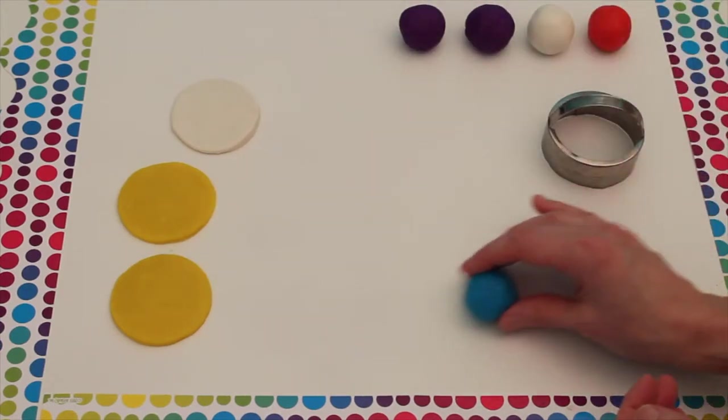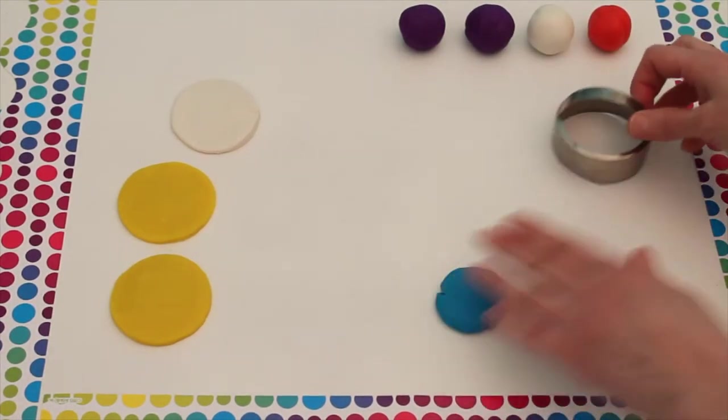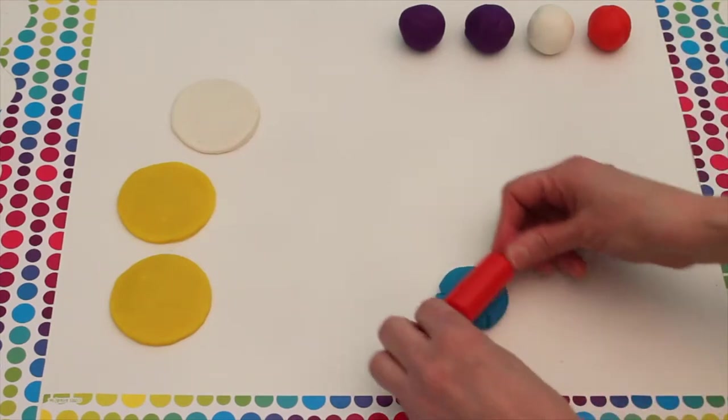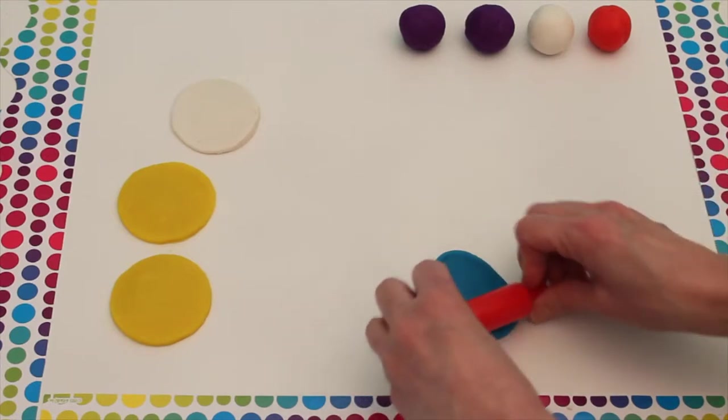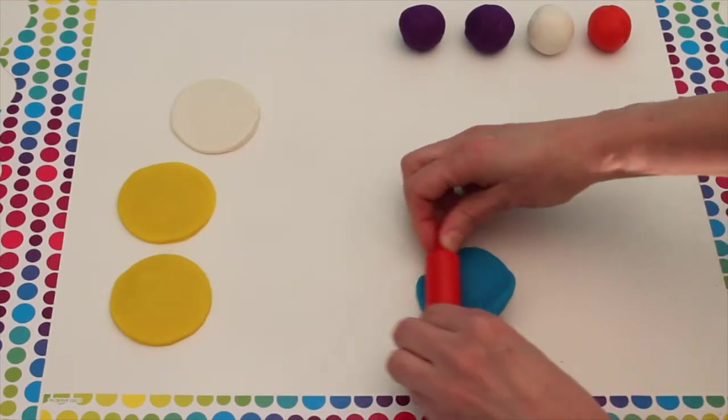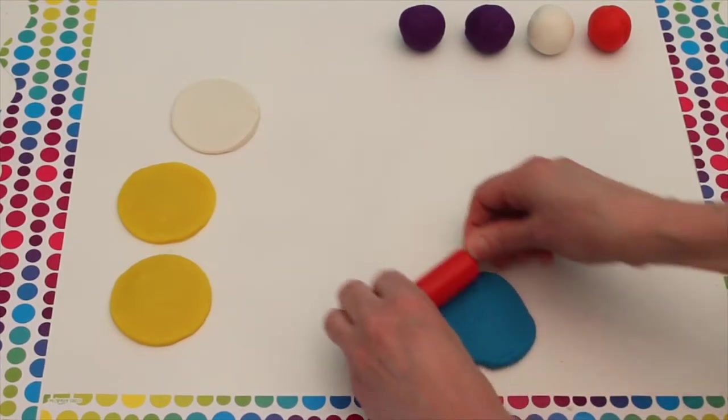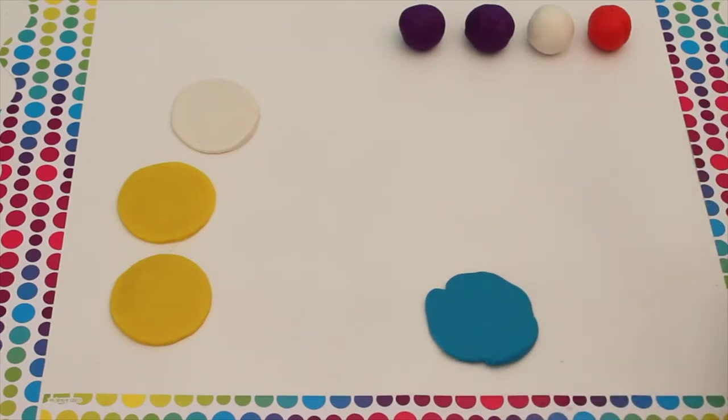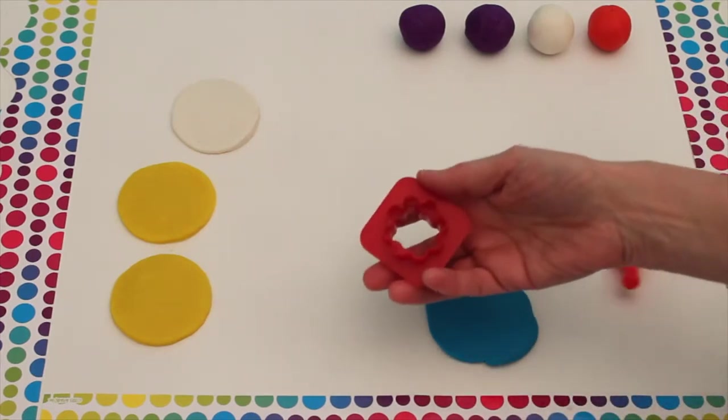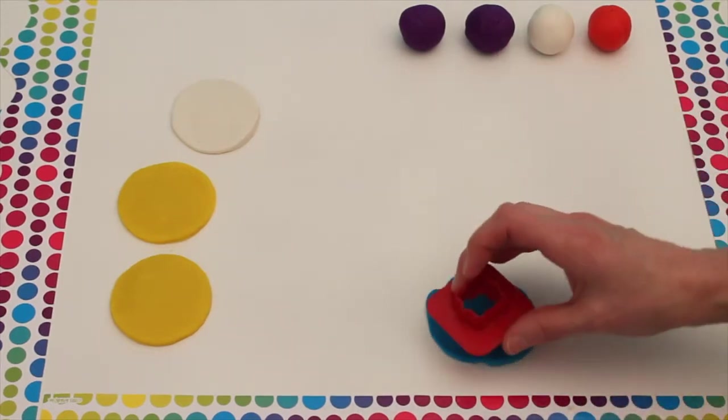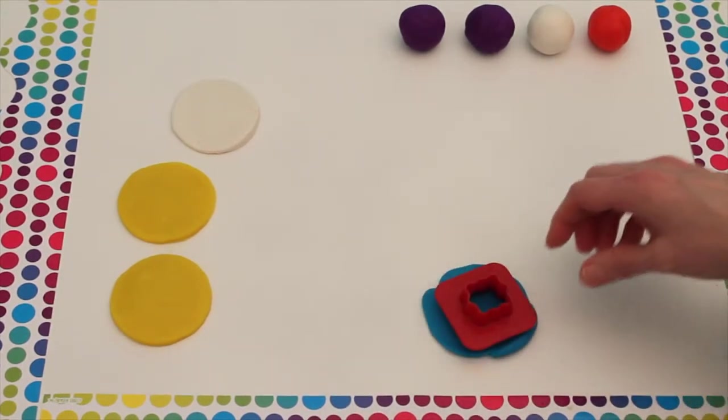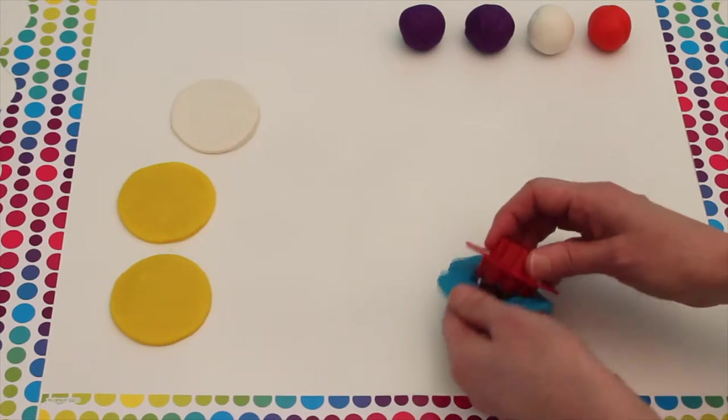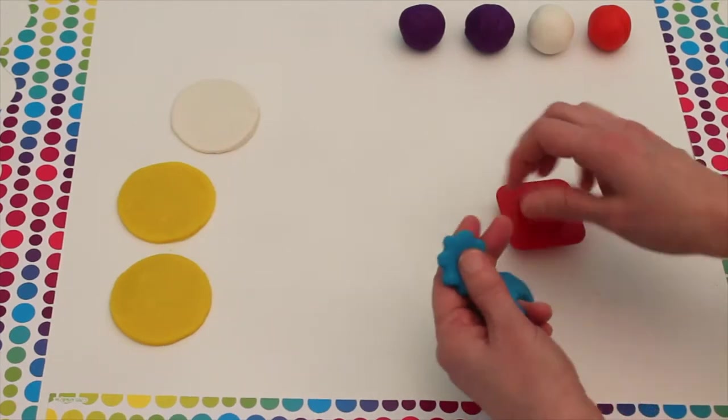Now we're going to use some blue. And this time we're going to make something a little bit different. Instead of a circle, we're going to make a different shape. We're going to use this cookie cutter and make a flower. Pretty blue flower shape. There it is.